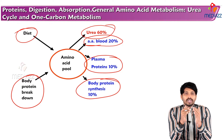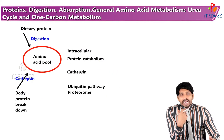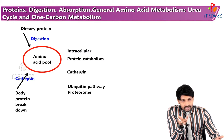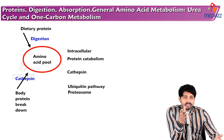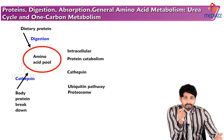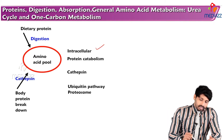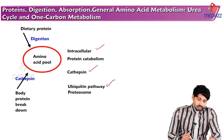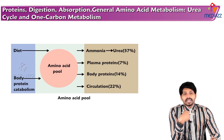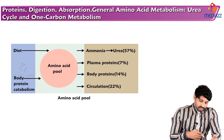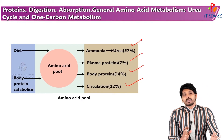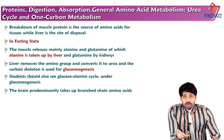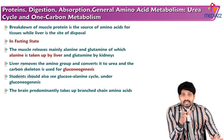Dietary protein contributes to the amino acid pool via digestion, and body protein breakdown via the cathepsin mechanism degrades half-life-completed proteins. Intracellular protein catabolism via cathepsins and the ubiquitin pathway also contributes to the amino acid pool. From the amino acid pool, ammonia forms urea, and plasma proteins and body proteins in circulation together make up 100% of the pool. Breakdown of muscle protein is a source of amino acids for tissues, while the liver is the site of disposal.